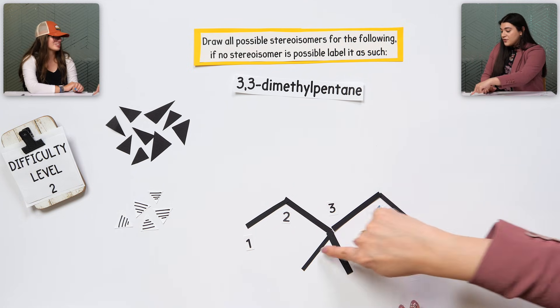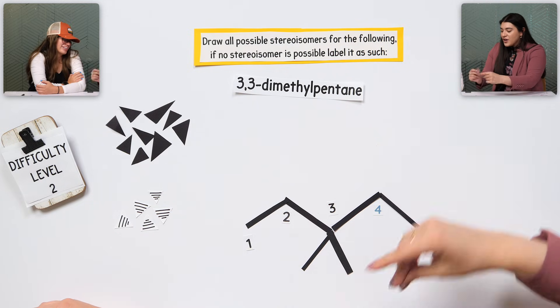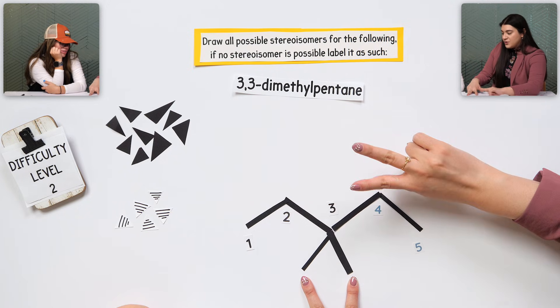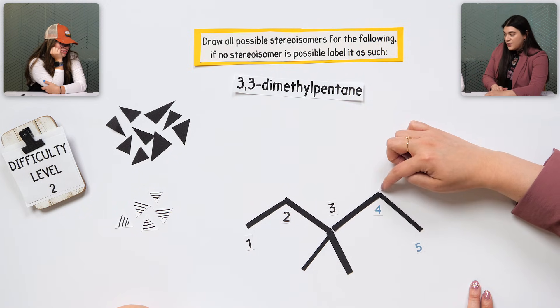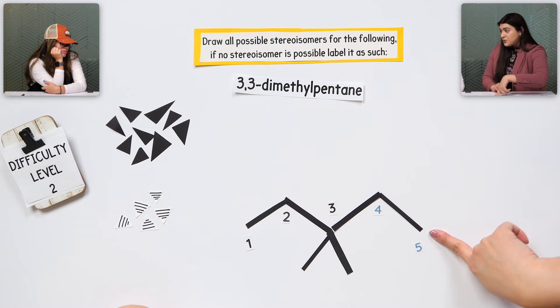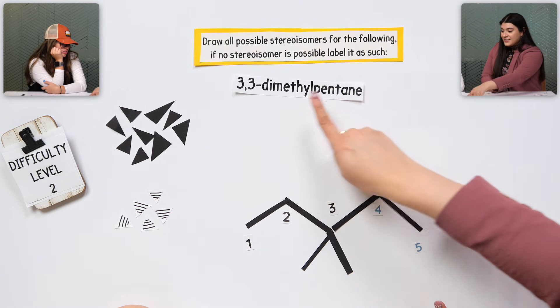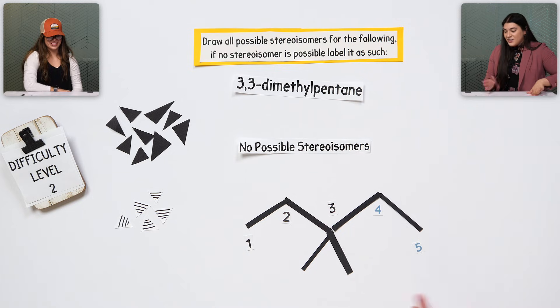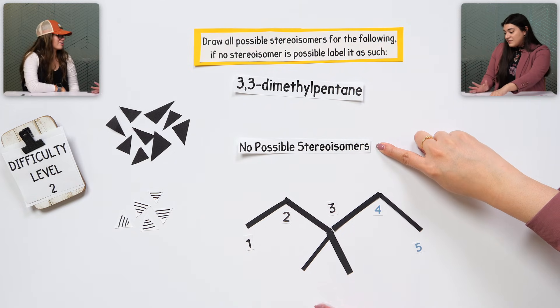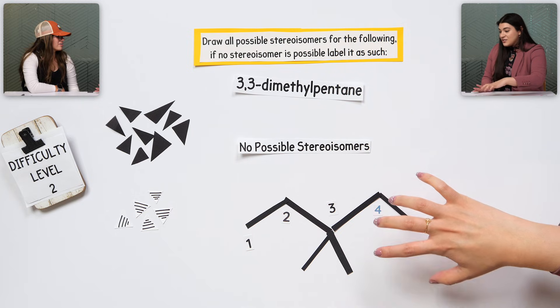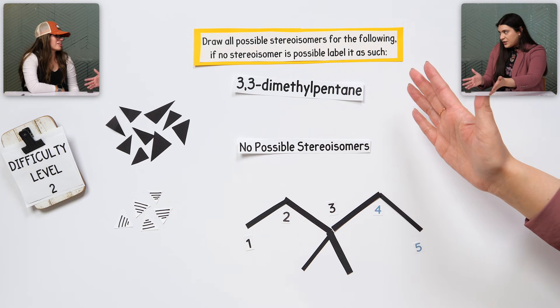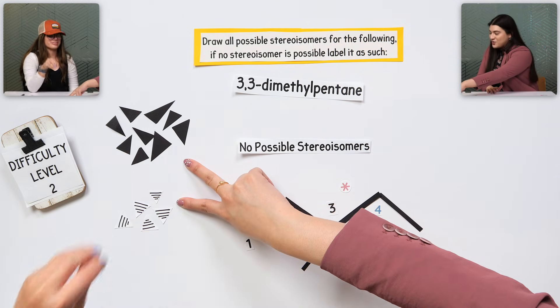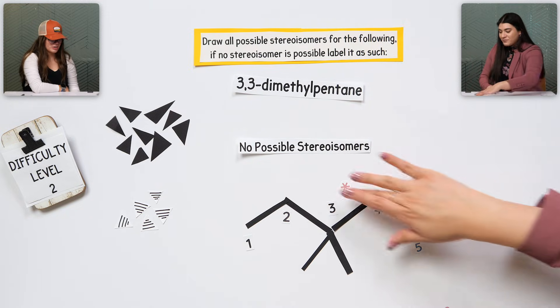So, if I were to pick any of the carbons, I'd only get three different groups, or two, but I wouldn't get four completely different groups. You wouldn't get four. Exactly. Most people would think, oh, there's branching. But these are the same groups. And then, same thing here. These two are the same groups. You only have two different groups. So, that's kind of the clue here. If no stereoisomer is possible, then we label it. No possible.